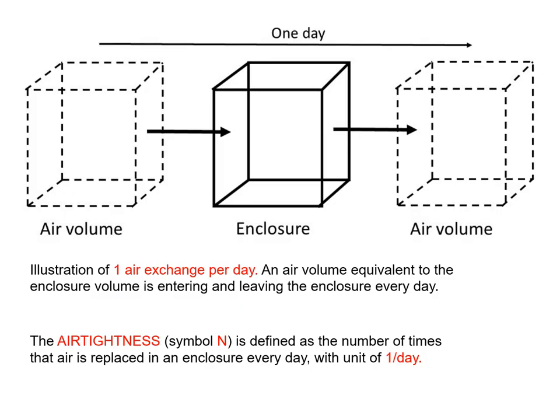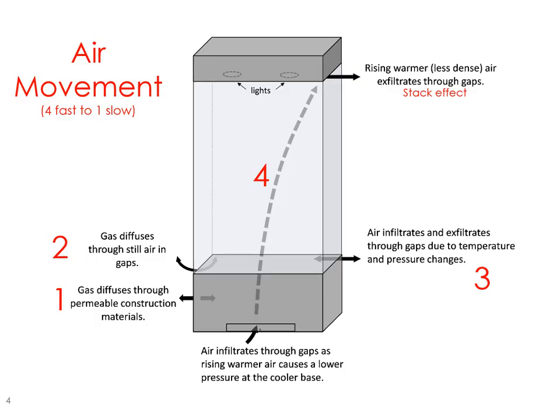A definition of air tightness: you could imagine an enclosure, a box, and the same amount of air as the volume of the enclosure goes in and gets out of the enclosure. This figure shows one air change per day — it is the air volume equivalent to the enclosure volume entering and leaving the enclosure every day. The air tightness, with the symbol N, is defined as the number of times air is replaced in an enclosure every day. The unit is one air change per day, or exchange per day.